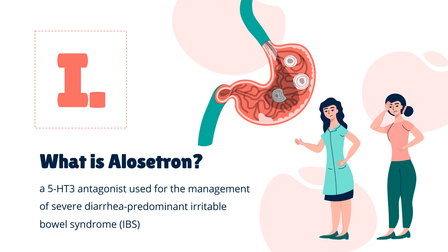Alosetron, sold under the brand name Lotronex among others, is a 5-HT3 antagonist used for the management of severe diarrhea-predominant irritable bowel syndrome (IBS) in females only. It was patented in 1987 and approved for medical use in 2002. It is currently marketed by Prometheus Laboratories Inc., San Diego. Alosetron was withdrawn from the market in 2000 owing to serious life-threatening gastrointestinal adverse effects, but was reintroduced in 2002 with availability and use restricted.